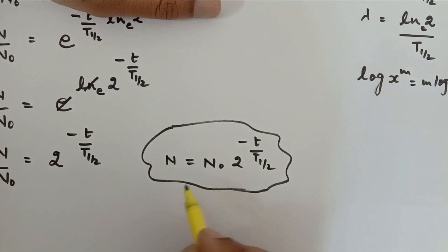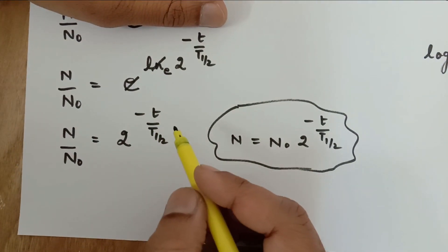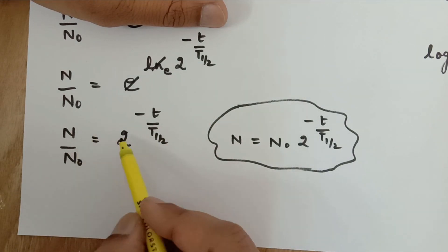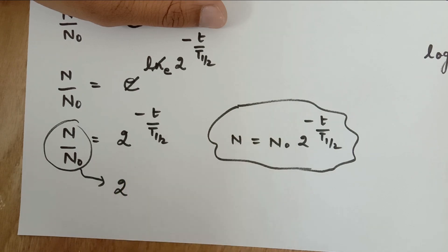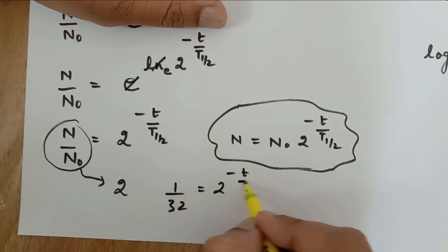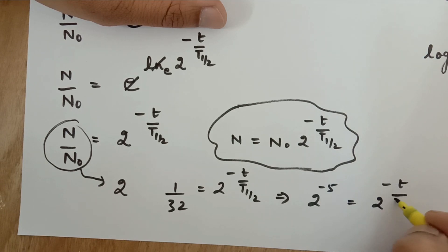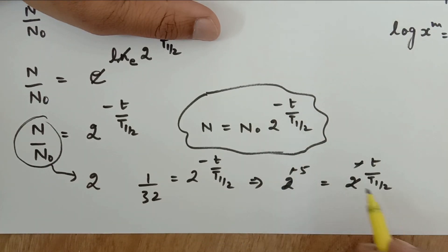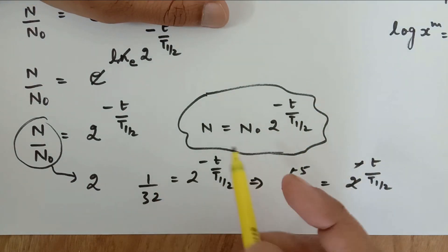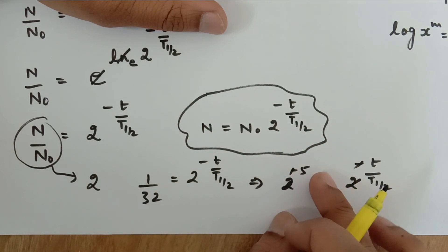This is our main expression which should be used at all times. The advantage of this equation is that most of the time in numericals you will be given the ratio as 2 to the power something. For example, if this ratio is 1 upon 32, that equals 2 raised to minus t upon t-half. This can be written as 2 raised to minus 5 equals 2 raised to minus t upon t-half, so directly you can say the time equals 5 times t-half.